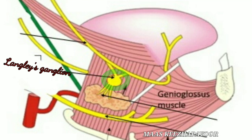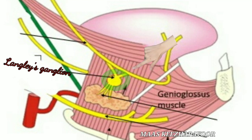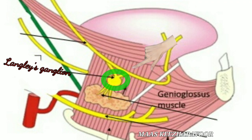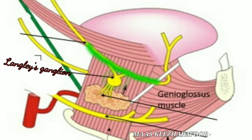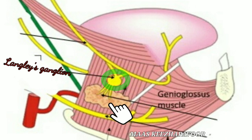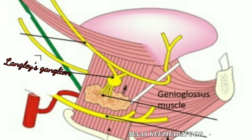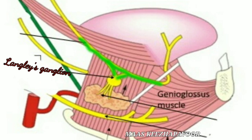The relations of the ganglion are: medially, the hyoglossus; laterally, the superficial part of the submandibular salivary gland; superiorly, the lingual nerve; and inferiorly, the deep part of the submandibular gland. The sensory root is given by the lingual nerve.